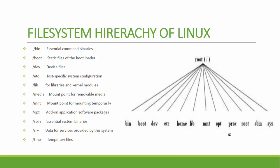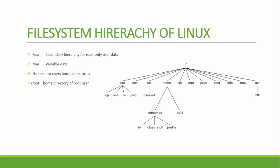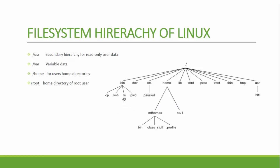The reverse file system structure looks like this: the root directory is slash, and under that we have bin, dev, etc, home, lib, mnt, proc, root, and more default directories. Under these directories there are subdirectories or files — for example, under bin you may find commands like cp, ksh, and pwd. Under home, a user directory like 'mthomas' may exist. It is organized so the root directory slash is at the top, with subdirectories and files branching below — a reverse tree structure. Slash represents the complete operating system where all files reside.